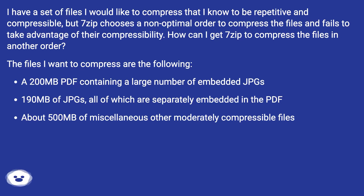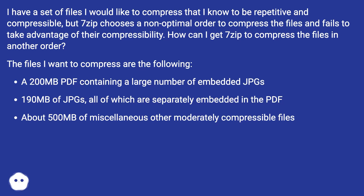The files I want to compress are the following: a 200 MB PDF containing a large number of embedded JPGs, 190 MB of JPGs all of which are separately embedded in the PDF, and about 500 MB of miscellaneous other moderately compressible files.